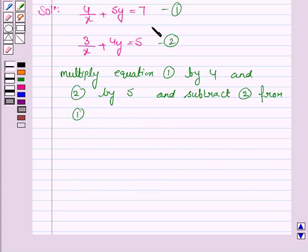Now we will multiply equation 1 by 4 and equation 2 by 5. We will have 16/x + 20y = 7 times 4, which is 28. Then, 15/x + 20y = 5 times 5, which is 25.